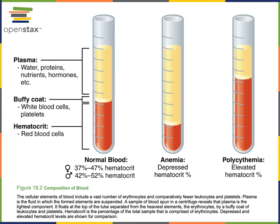Polycythemia is an increased number of erythrocytes. A mild form can be caused by dehydration. Another form can result from exposure to high altitude, as the low partial pressure of oxygen stimulates the kidneys to produce more erythropoietin, stimulating increased erythropoiesis. Another cause is genetic — polycythemia vera is a rare form of bone marrow cancer where mutations in genes controlling erythrocyte production lead to increased erythropoiesis, excess erythrocyte production, and uncontrolled cell division.